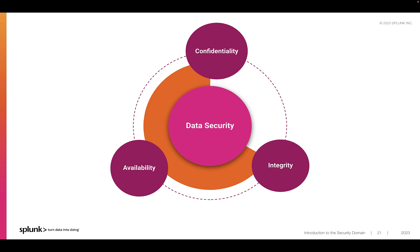Availability sounds a bit more obvious — it means that the data is available for those who need it when they need it. And it is also important, because my data can be accurate and private, but if I can't access it when I need it, then what's the point? Availability covers, for example, protecting systems against denial-of-service attacks, as well as having data or infrastructure backups in case something is lost, compromised, or broken. So for data to be protected and secure, there should be mechanisms that ensure it is only disclosed to authorized users, and that it won't be maliciously altered, destroyed, or made unavailable.